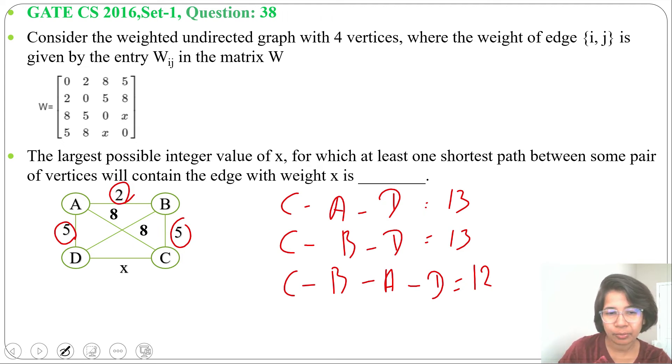So if X value will be 12, either we can choose the shortest path C to B, B to A, A to D or we can choose this X value.